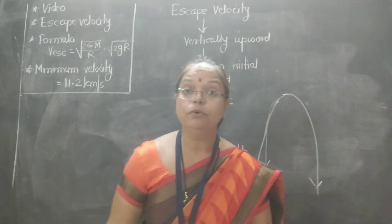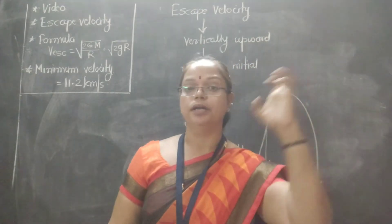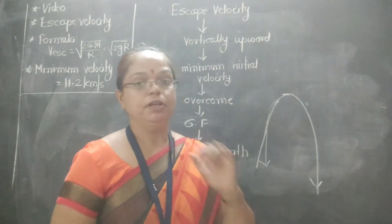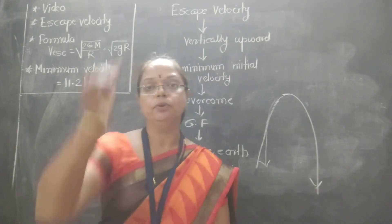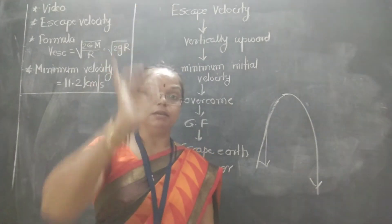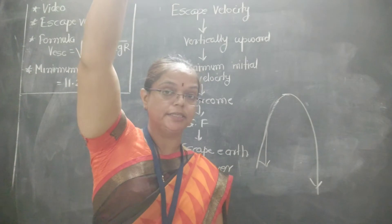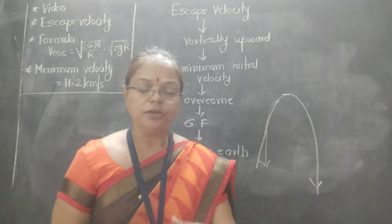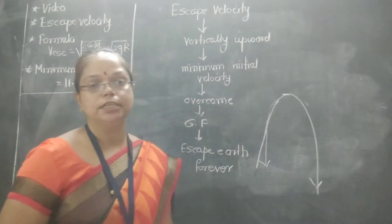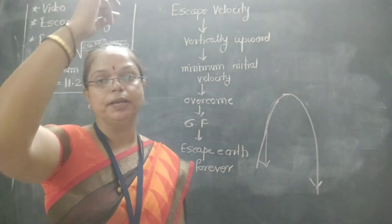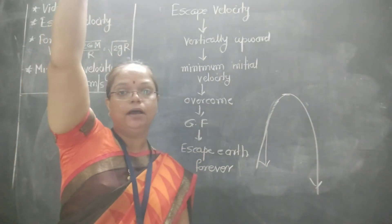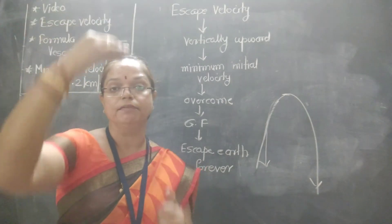Now I want to move that body to a greater height, so I provide it more velocity. If I continuously increase the velocity, the body will attain greater and greater maximum height. At one particular velocity, it will attain maximum height such that it overcomes the gravitational force.